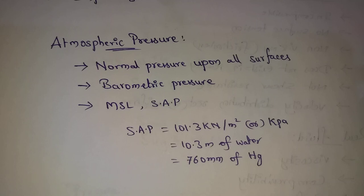SAP equals 10.3 m of water. SAP also equals 760 mm of Hg. These are the values for standard atmospheric pressure.